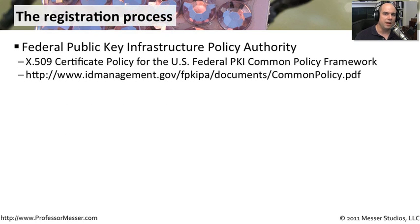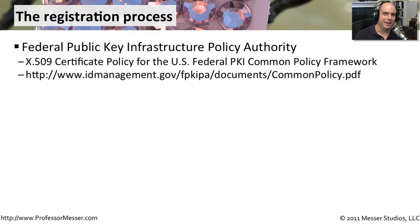To give you an example of one type of process in place for key registration, let's look at the Federal Public Key Infrastructure Policy Authority. This is the X.509 certificate policy for the US Federal PKI Common Policy Framework, and there is the URL. We have very detailed processes and procedures here in the United States, and this is a document that describes the processes and procedures around having a key associated with a person.